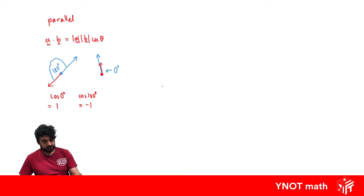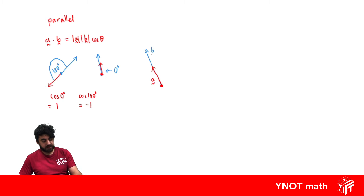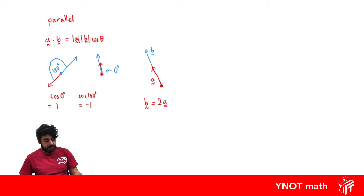Consider a vector A and another vector B that is half its length. We can describe these two vectors as B equals 2 times A. If vectors are parallel, it also means that one is just a scalar multiple of the other. So now we have a few ways to determine if vectors are parallel.